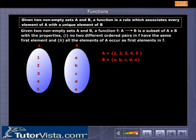Given two non-empty sets A and B, a function F from A to B is a subset of A into B with the following properties: (i) No two different ordered pairs in F have the same first element, and (ii) All the elements of A occur as first elements in F.